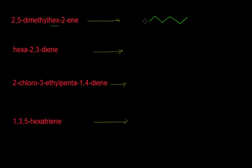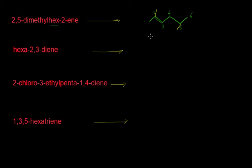Let me give the numbering to these carbons: 1, 2, 3, 4, 5, and 6. We have a double bond at position number 2 and two substituents — 2,5-dimethyl. So we have one methyl group at position 2 and another methyl group at position number 5. This is the structure of this molecule.